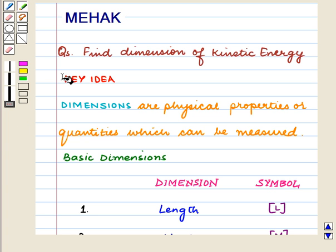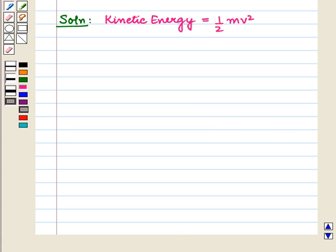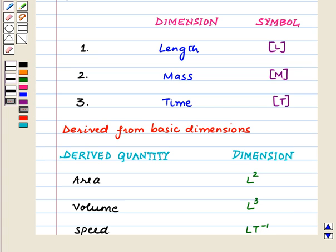With this key idea, let us proceed with the solution. We have to find the dimension of kinetic energy. We know that kinetic energy equals ½mv², where m is mass and v is speed. From the tables, the dimension of mass is M and the dimension of speed is LT⁻¹.